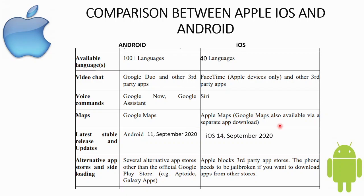The latest stable release for Android is Android 11, released in September 2020. The latest stable release for iOS is iOS 14, also released in September 2020.